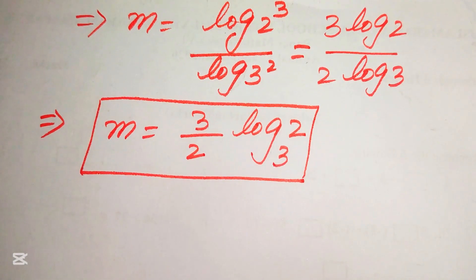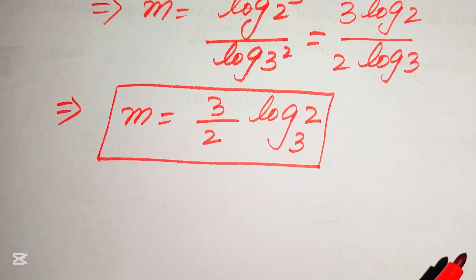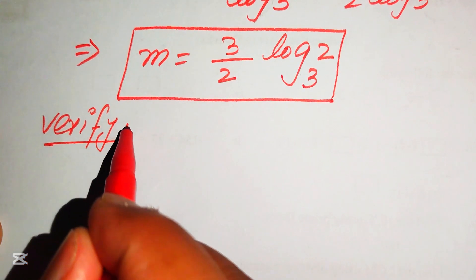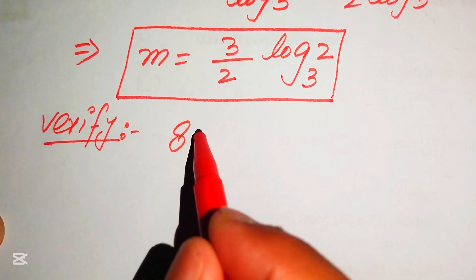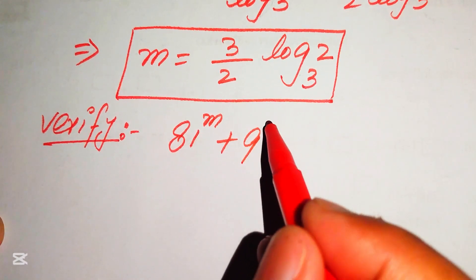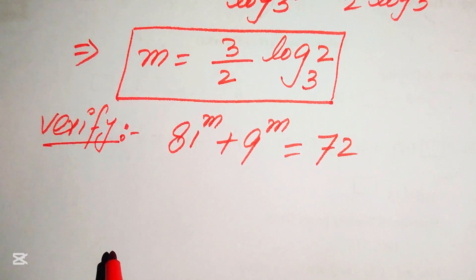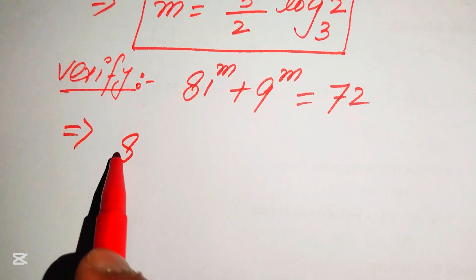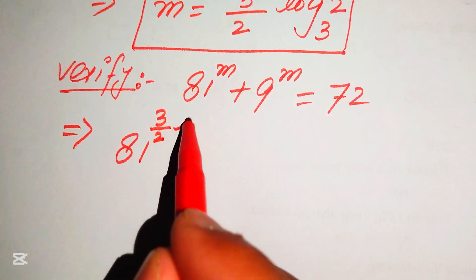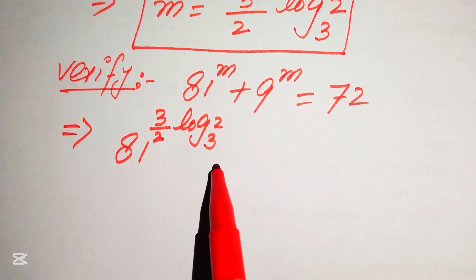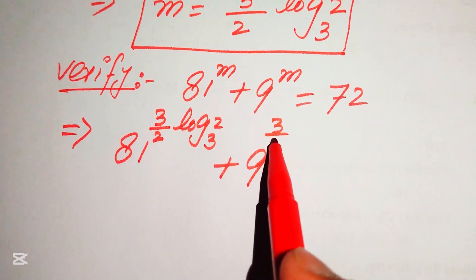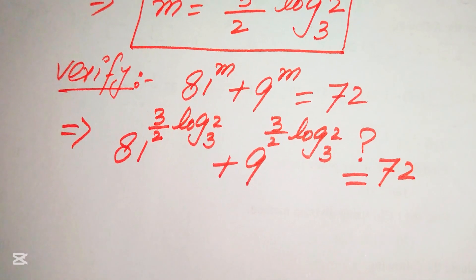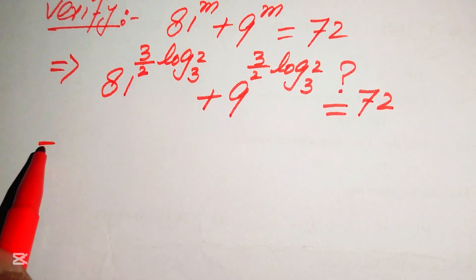Now we verify this value of m satisfies the original equation 81 to the power of m plus 9 to the power of m equals 72. Substituting m equals 3 over 2 times log base 3 of 2, the left-hand side becomes 81 to the power of (3/2 · log₃2) plus 9 to the power of (3/2 · log₃2).